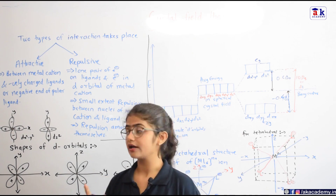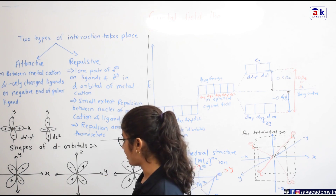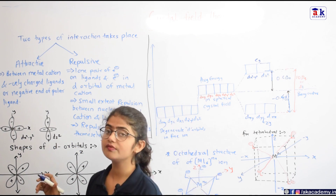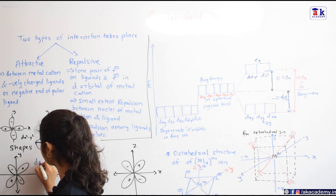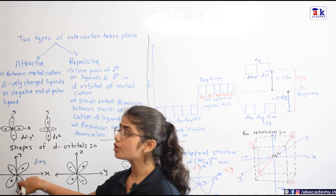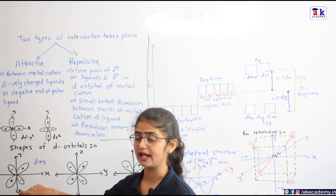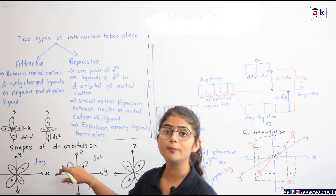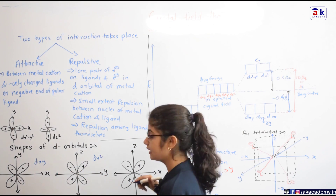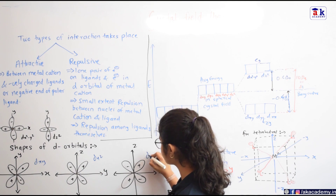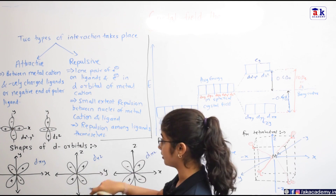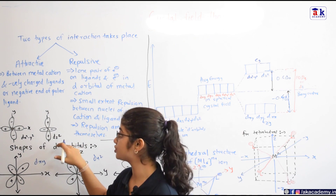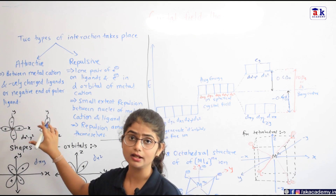There are five d orbitals: dxy, dyz, dxz, dx²-y², and dz². For dxy, dyz, and dxz, the lobes of the d orbitals lie in between the axes. However, for dx²-y² and dz², the lobes lie directly on the axes. This distinction is very important for understanding crystal field splitting.